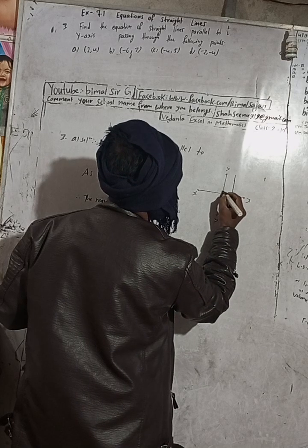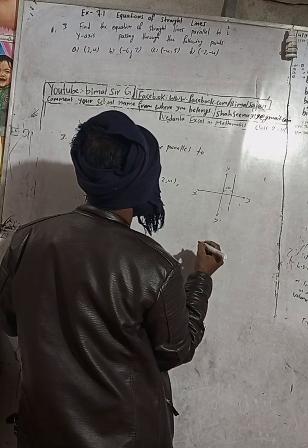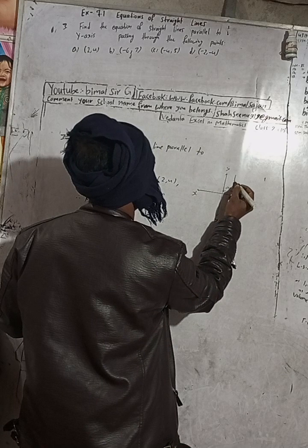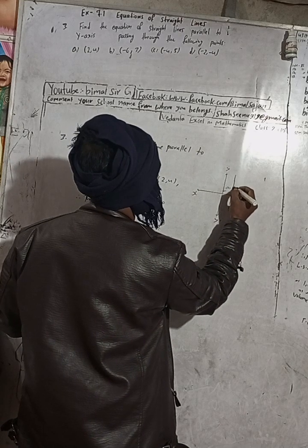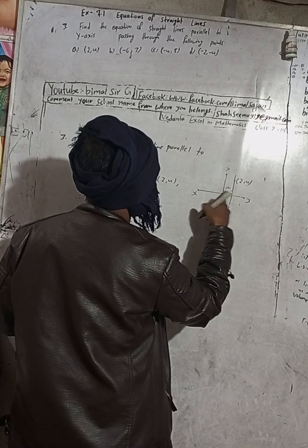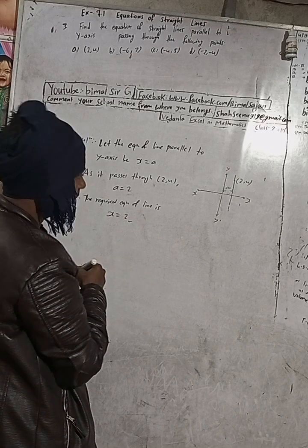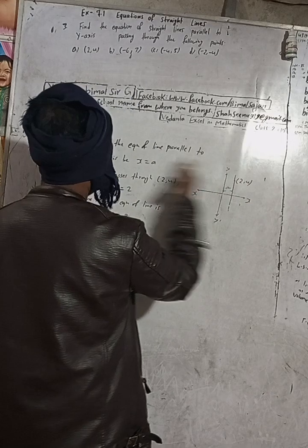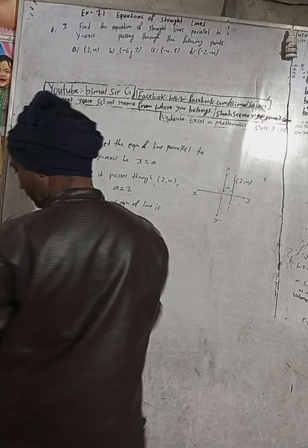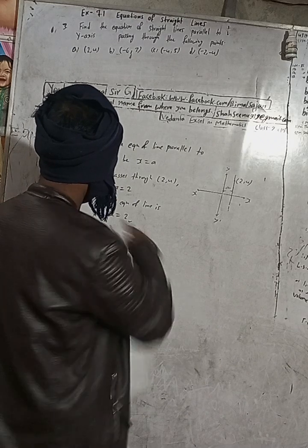This distance from the origin to the line is what we've supposed as 'a', which equals 2 — the x-coordinate. That's why the equation is x = 2. The line is parallel to the y-axis, either to the left or right side. The answer in the book for part (a) is x = 2, which is correct.